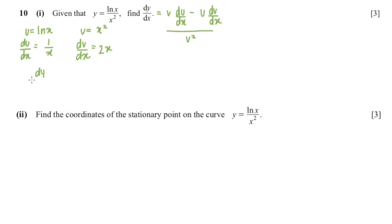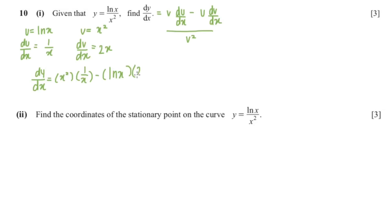Now we substitute into the formula: v is x squared multiplied by 1/x, minus u which is ln(x) multiplied by dv/dx which is 2x, and the whole thing over x to the power 4.